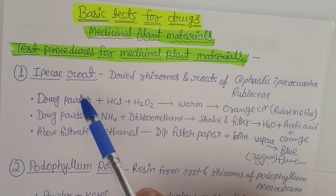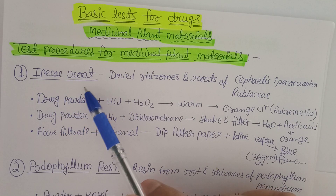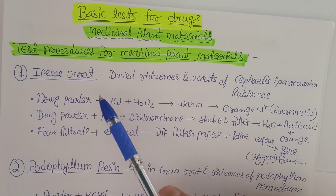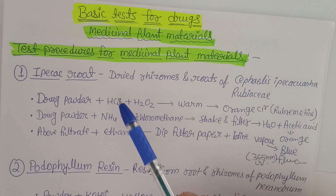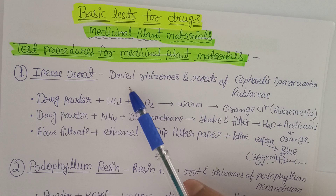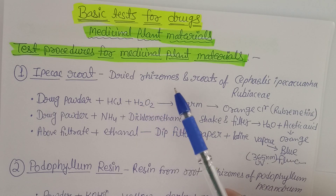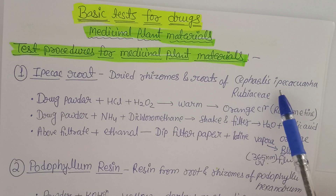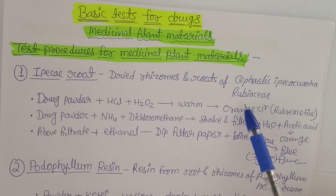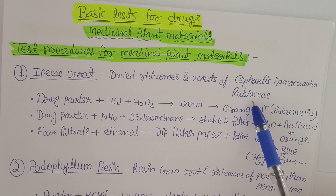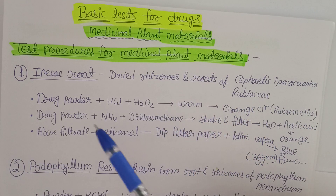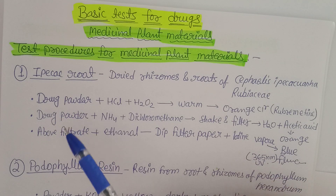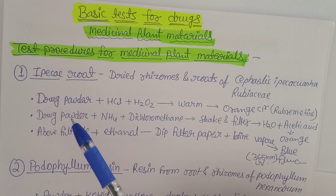The first example is Ipecac root — Ipecacuanha. Whenever it comes for testing, it must be the dried rhizomes or dried root of Cephaelis ipecacuanha, which is the botanical name. It belongs to the Rubiaceae family. Three tests have been given with minimum chemical requirements so that even a small laboratory can identify it.